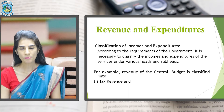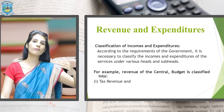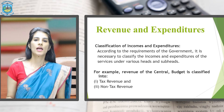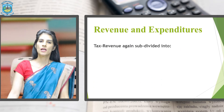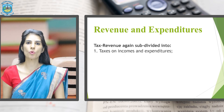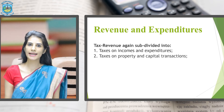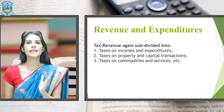Let us now discuss revenues and expenditure. Revenue in simple terms means the receipts. The receipts of the Government can be of two types: Tax Revenue, which is the income earned by way of taxes, and Non-Tax Revenue, which is income apart from taxes. Tax Revenue can be from incomes and expenditures like income tax, taxes on property and capital transactions like capital gain tax, and taxes on commodities and services like GST.